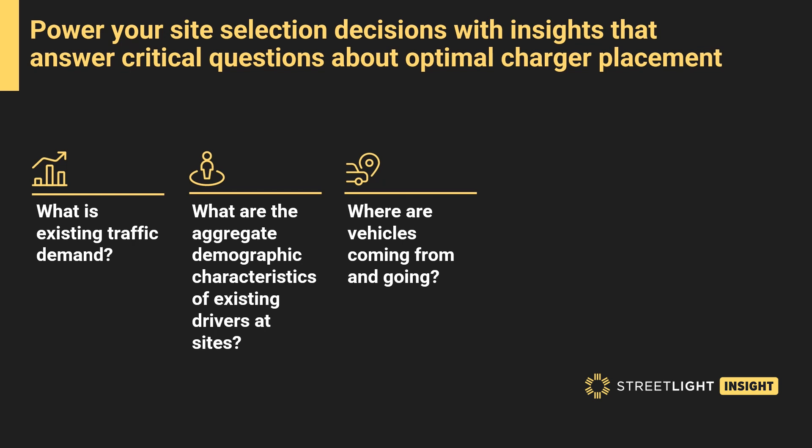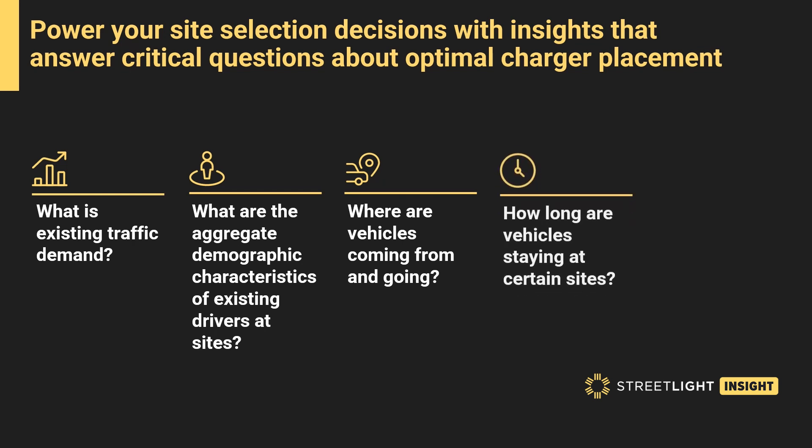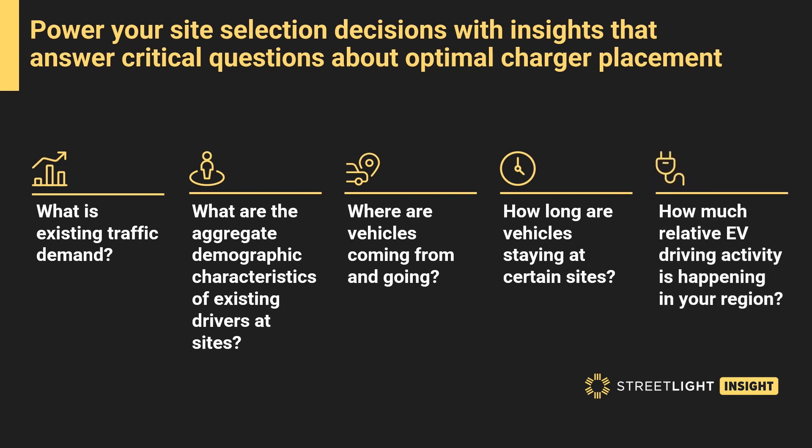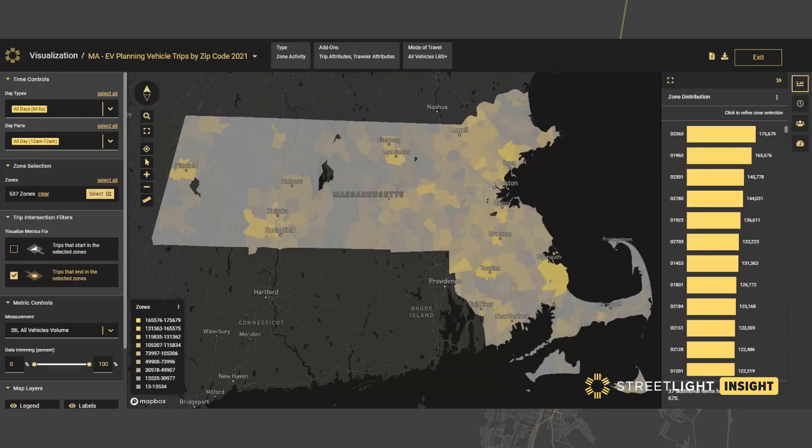Access vehicle dwell time with custom trip distances to determine how long vehicles are stopping at potential charger locations. Analyze electric vehicle trip patterns and common trip starts and ends to determine if the travel patterns are similar or different than plug-in hybrid and gas-powered trips. Let's take a look at an EV charging analysis in StreetLight Insight.